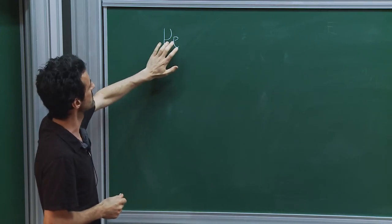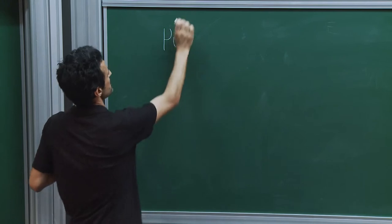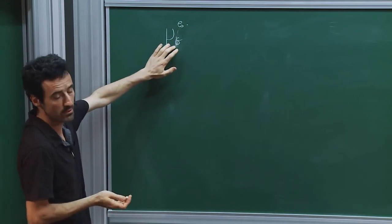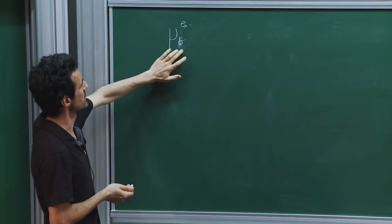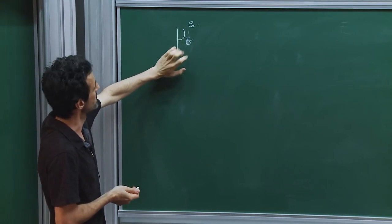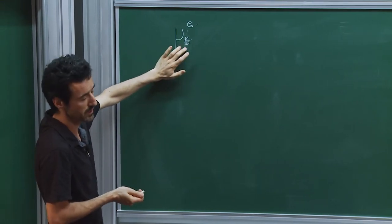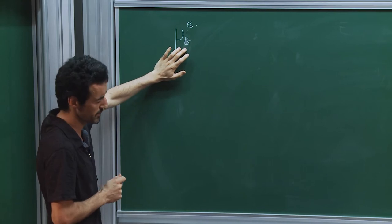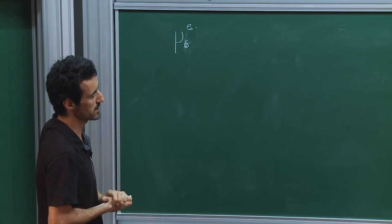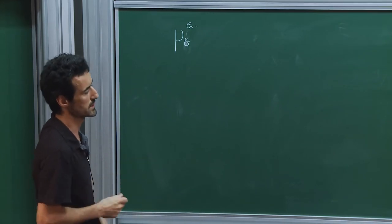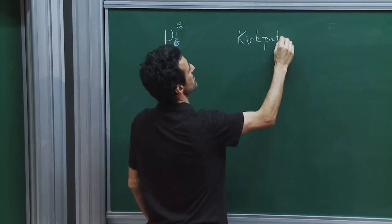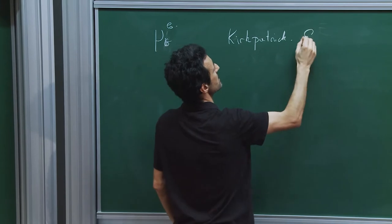If you have a finite graph, this measure will be purely atomic. We have mentioned this example from group theory — for example, on the Lamplighter group — where this measure can also be purely atomic. There is also a very simple way to create atoms on infinite graphs, first observed by Kirkpatrick and Eggerter.